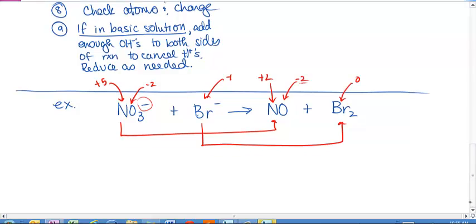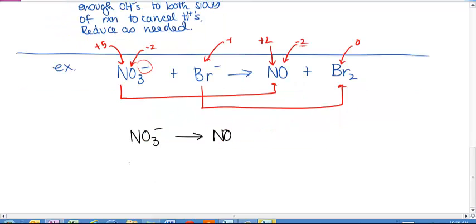I can see nitrogen goes from plus 5 to plus 2. I can see that bromine goes from minus 1 to 0. Again, it's probably pretty easy to see who hooks up with who in this case. So here are my half reactions. The nitrate ion turns into nitrogen monoxide. The bromide ion turns into bromine. One is the oxidation. One is the reduction. In this case, the nitrogen is the reduction. We're going to go through the steps. I wrote the half reactions.